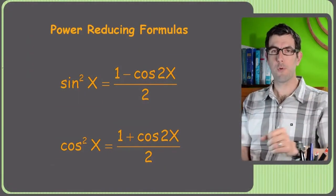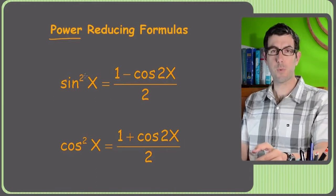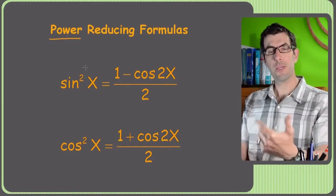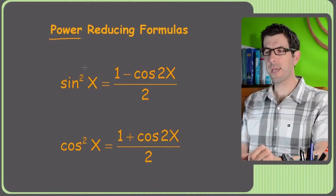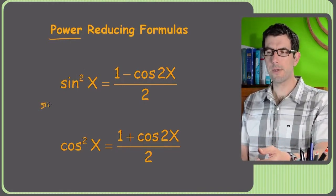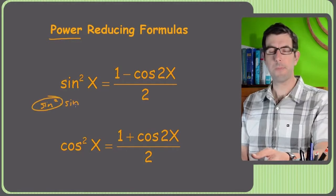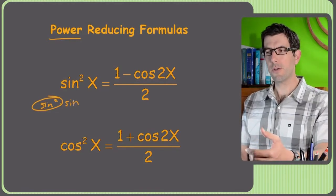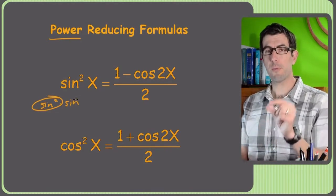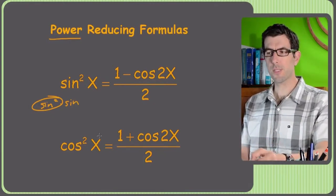All right, the power reducing formulas. Now it says power reducing, but really this is just for sine squared and cosine squared, although you can use them for higher powers. As we'll see in a second, if you had sine cubed, sine cubed would just be sine squared times sine to the first power, and now all of a sudden you can use this to sub in for sine squared and leave sine the way it is. So we can use them for various powers, but the formulas themselves are just these two, with sine squared and cosine squared.